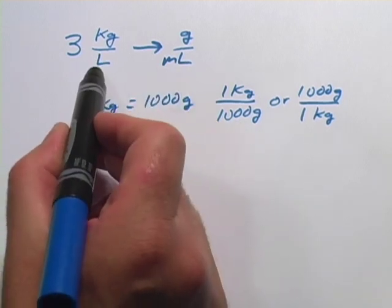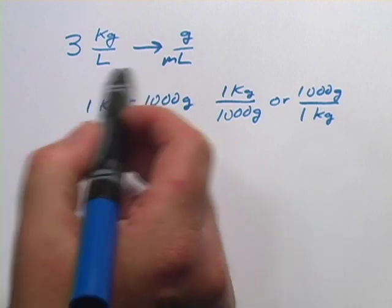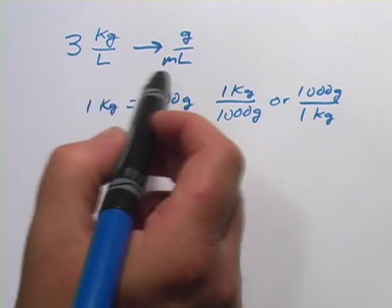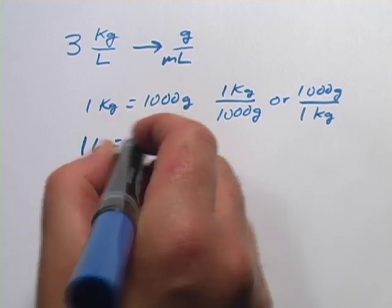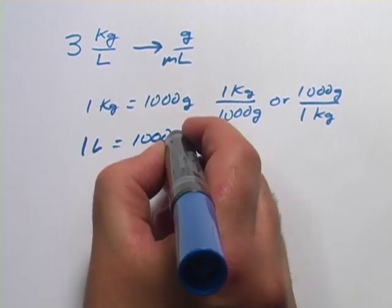Let's look at the other conversion we're going to have to do between liters and milliliters. Again, you should look that up if you're not sure how many milliliters in a liter. It's the same relationship actually. In one liter, there are 1000 milliliters.